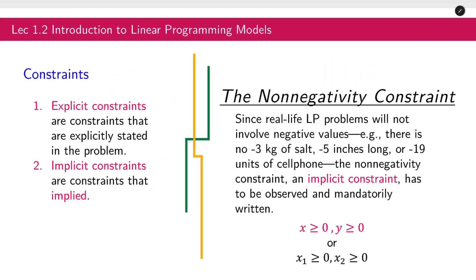Now that we have already talked about the objectives and the decision variables, let's talk about the constraints. There are two types of constraints. First is the explicit constraint. These are the constraints that are explicitly stated in the problem. And the second one, implicit. These are the constraints that are implied, the non-negativity constraint.